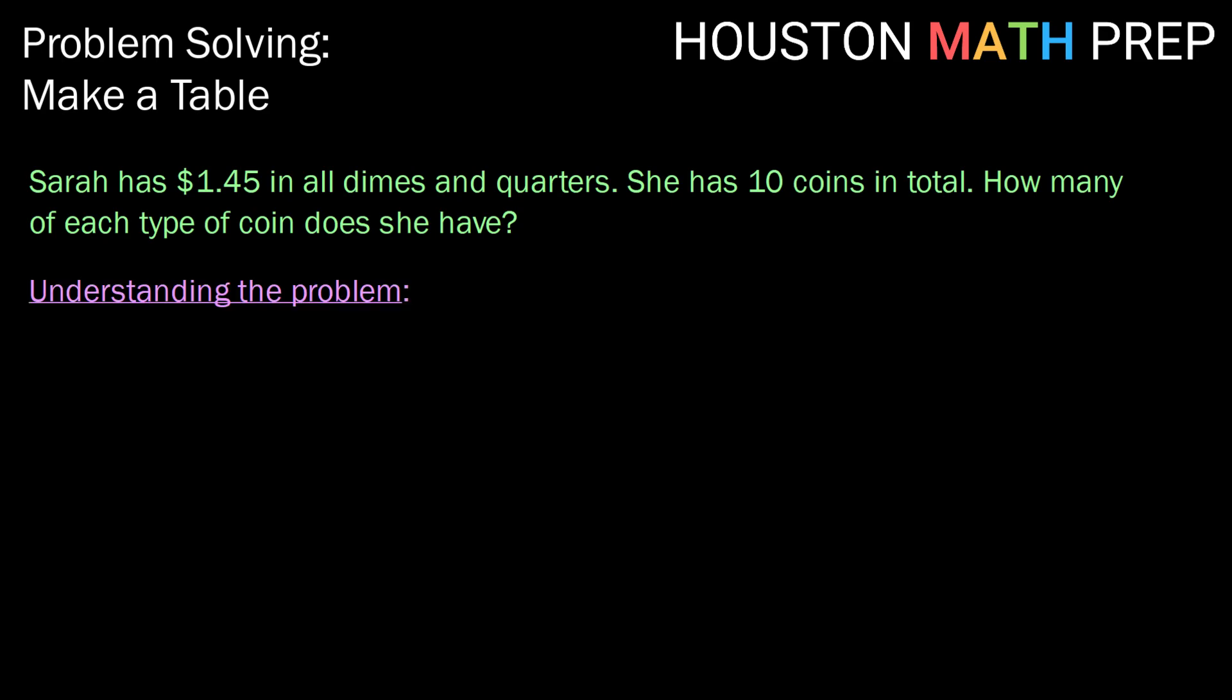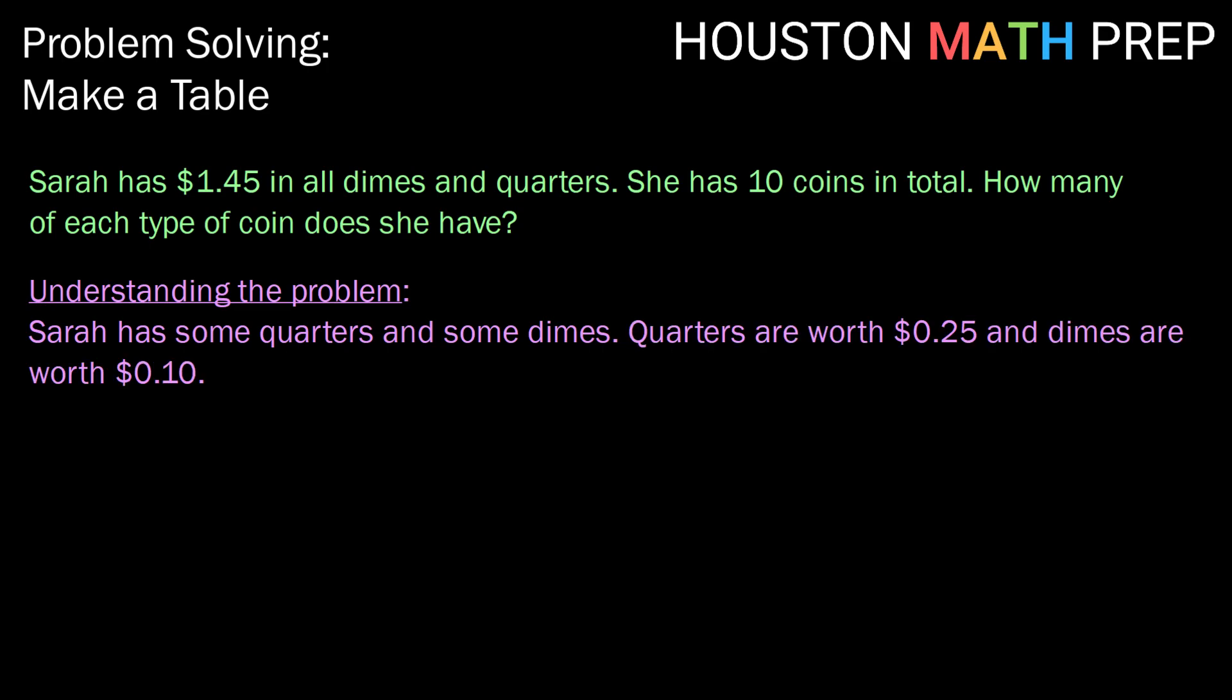First, we want to make sure that we understand the problem. We know that Sarah has some quarters and some dimes. We know that quarters are worth 25 cents and dimes are worth 10 cents. We also know that she has a total of $1.45.